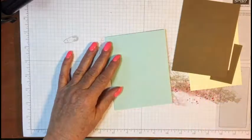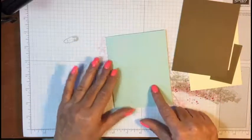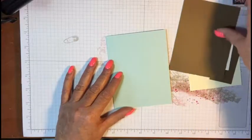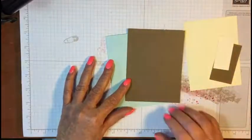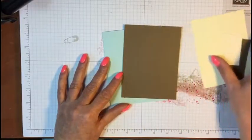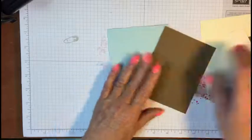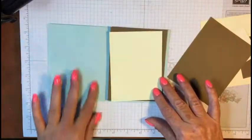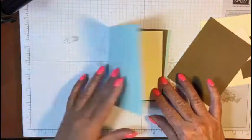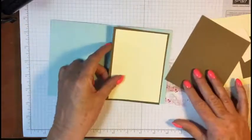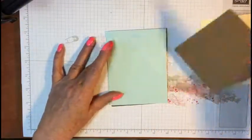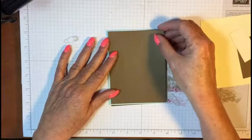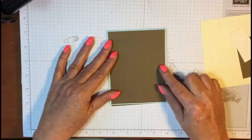What we're gonna be using is soft sky cardstock, soft suede, very vanilla—this is cut at five and a half by eight and a half, scored at four and a quarter. There's a piece on the inside that matches.